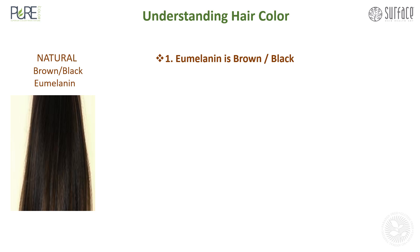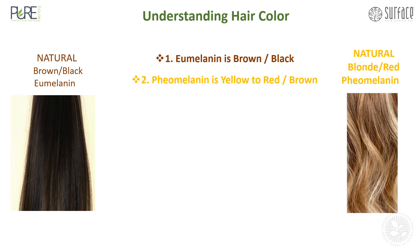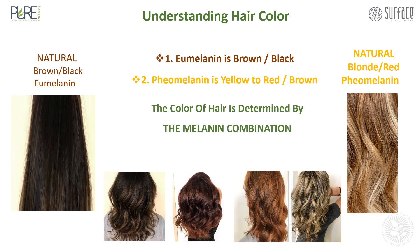Natural brown to black hair is predominantly eumelanin. Natural blonde to red hair is predominantly pheomelanin. And all hair types, based on your DNA, is a combination of melanin.